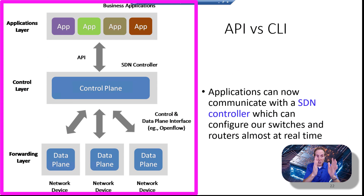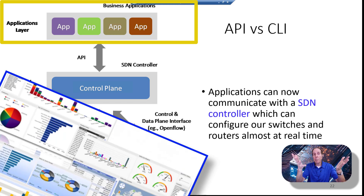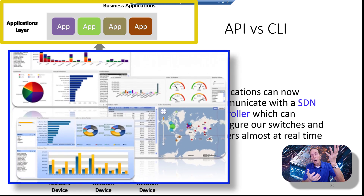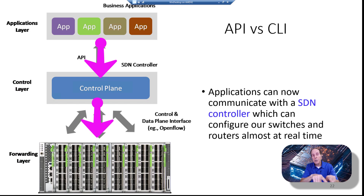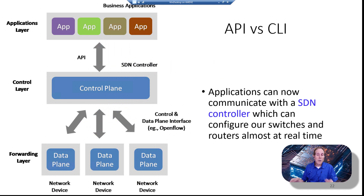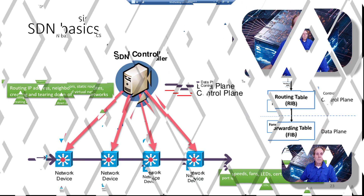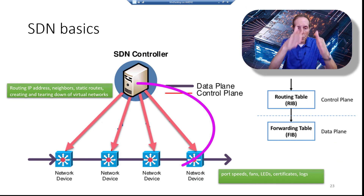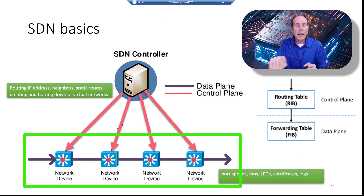In the SDN diagram, notice the SDN controller in the center. Above it are business applications like Kubernetes and container orchestrations that talk to the SDN controller. Below are network devices — switches, routers, firewalls — configured through APIs. The red arrows going down to the switches represent the control plane, and the dark blue line through the switches is our network traffic, which is the data plane.